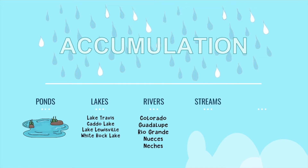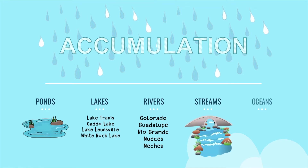You also have streams where water can accumulate. And of course, eventually all the water leads back to our oceans — the Atlantic, Pacific, Indian, Arctic, and Southern Ocean.